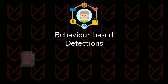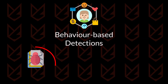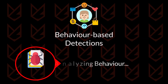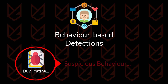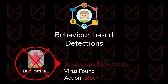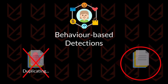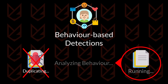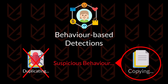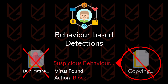In behavioral-based detections, antivirus analyzes the behavior of the applications. When their actions match with the virus, they are flagged as a virus. This technique is also susceptible to false positives. If a normal program does any activity that looks like a virus, antiviruses block it.